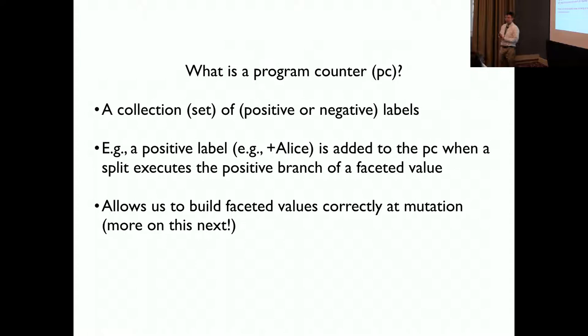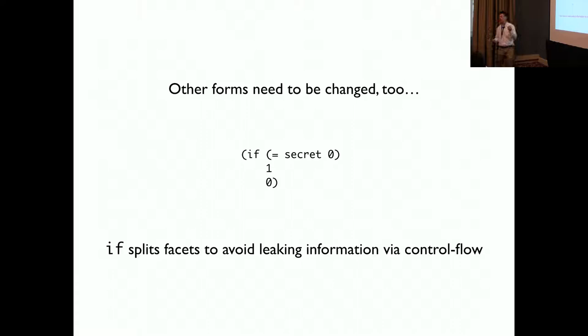What is a program counter? A program counter is a collection or set of positive or negative labels. For example, a positive label is added to PC when a split executes the positive branch of a facet value. And it also allows us to build facet values correctly and mutation so that we can change the value of a reference.